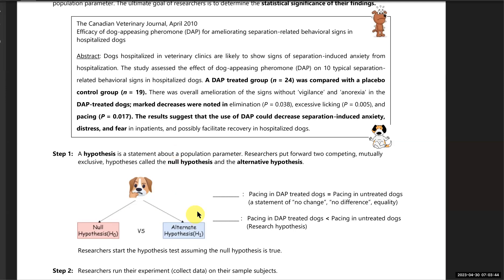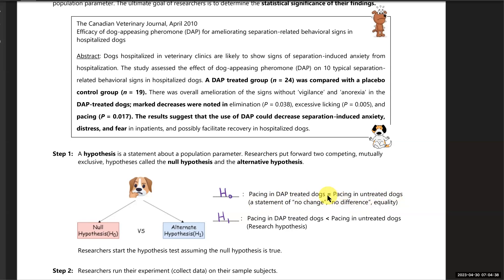H stands for hypothesis — that just means statement — and subscript one is our alternative hypothesis. Their research hypothesis — what they were hoping to show — is that pacing in dogs treated with DAP will be smaller than pacing in untreated dogs. If DAP is a positive influence on decreasing anxiety, we would expect the DAP dogs to pace less than their counterparts in the control group. The other hypothesis is called the null hypothesis, H subscript zero. This hypothesis is a statement of no change, no difference, or equality — so we see an equal sign. The null hypothesis is basically that DAP is not helpful: pacing in DAP-treated dogs will be equal to pacing in untreated dogs.